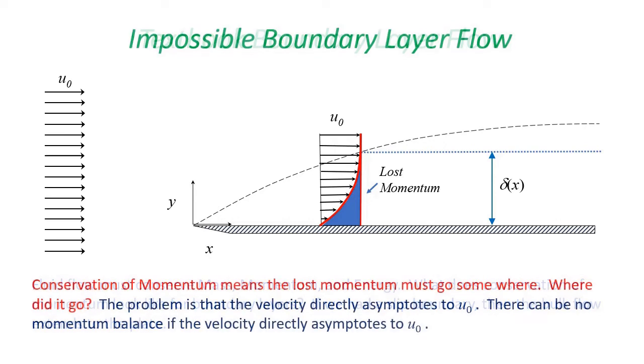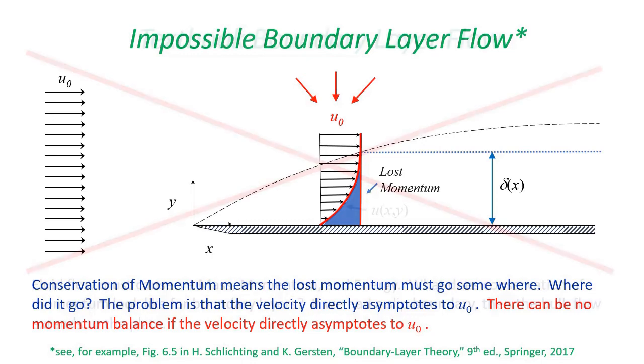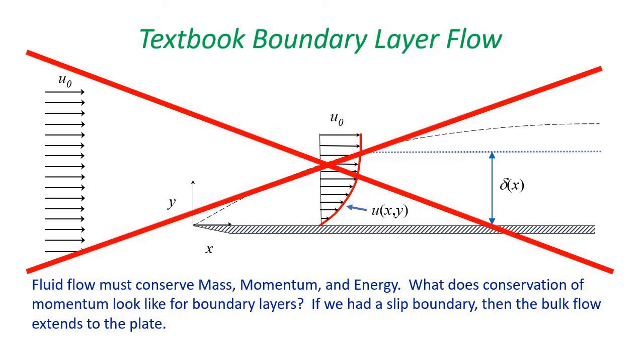We have to have conservation of momentum, so the question is where did this momentum go? If the velocity directly asymptotes to u sub zero, the answer is the missing momentum apparently disappears into another dimension or something. The textbooks never explain where it goes. Okay, let's be clear here. Any textbook depicting the boundary layer in this manner is just wrong. It cannot happen this way. So we are back to the question of where does the momentum go.